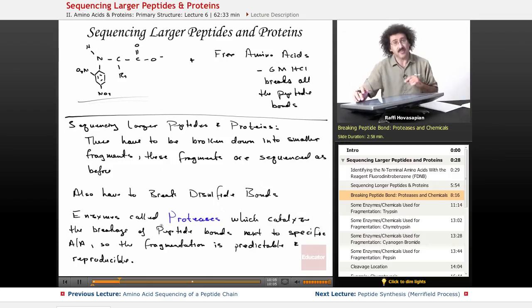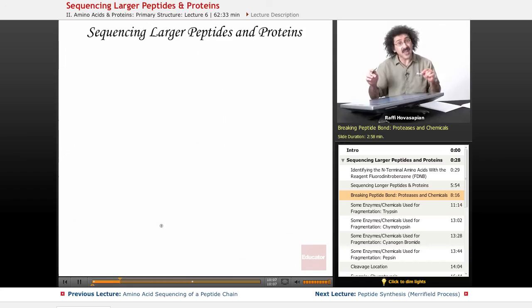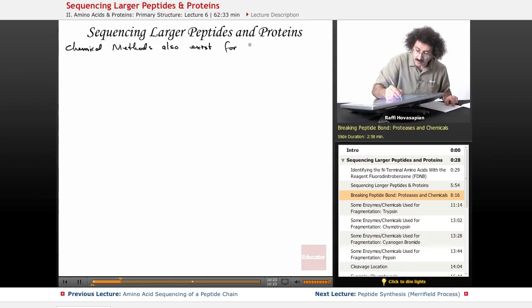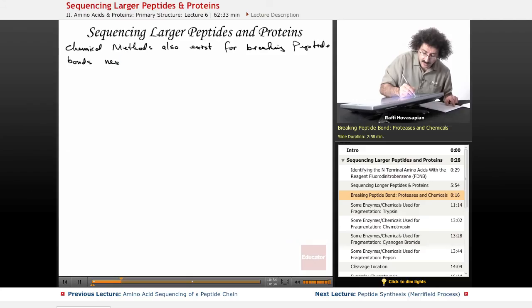These proteases are perfect. Because they cut the peptide chain next to specific amino acids, they're reproducible and they're predictable. We know exactly where they're going to be cut, and that's what's really nice. In addition to enzymes called proteases, we also have some chemical methods that do the same thing. Chemical methods also exist for breaking peptide bonds next to specific amino acids.